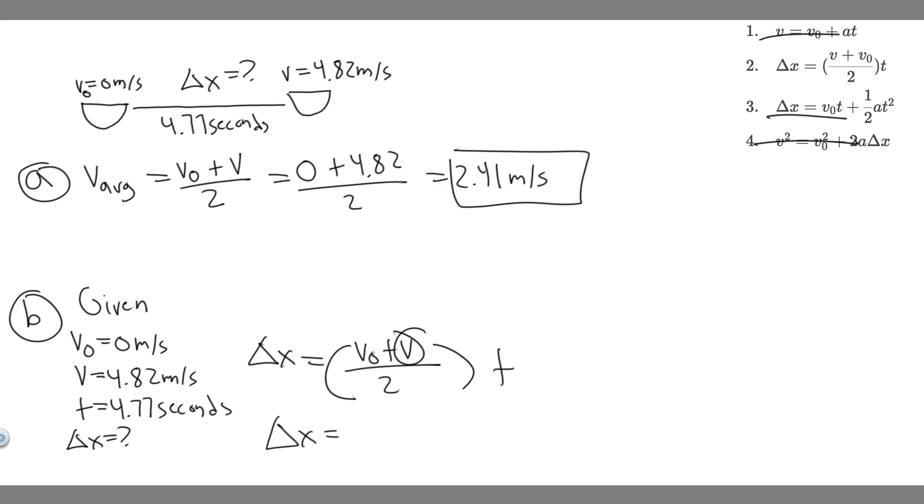So delta X equals 2.41, and then multiply by the time. What's the time? It's going to take 4.77 seconds. So if you do 2.41 times 4.77, you're going to get 11.4957, so basically 11.5. And then keep in mind the units. This is measured in seconds, and then this was meters per second. Notice the seconds will cancel, and you'll just get it in meters. And that makes sense, because we're measuring distance. So it's going to be about 11.5 meters.